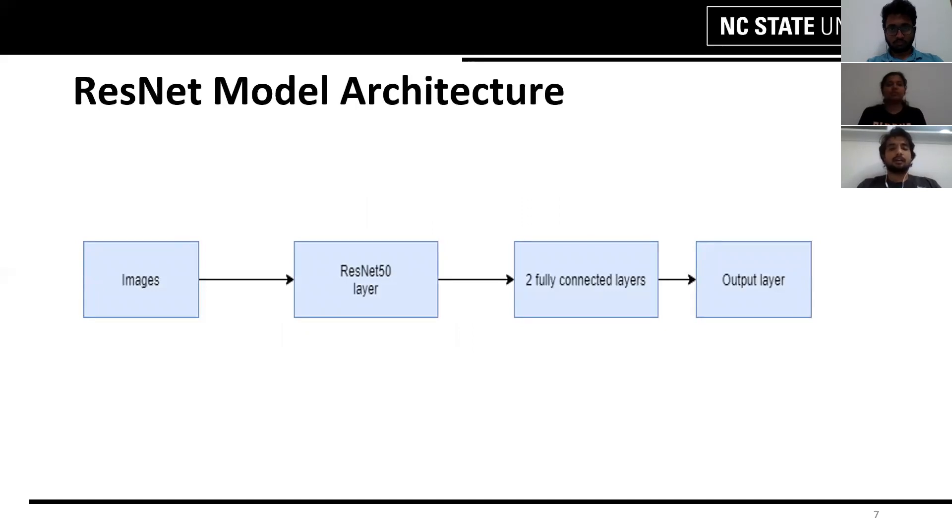In this slide, we are seeing the ResNet model architecture. We first feed the image to the ResNet50 layer. The image which we are feeding is basically an RGB image and the ResNet50 layer has pre-trained ImageNet weights for training purpose.